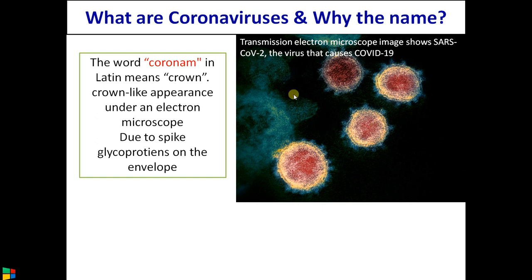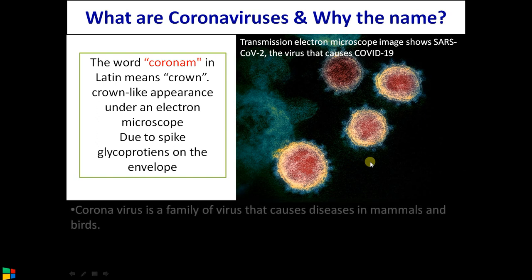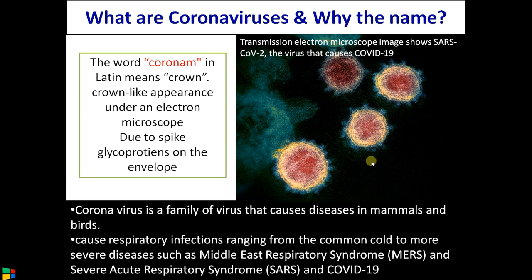It is actually the spike glycoprotein that projects out of the envelope. Coronaviruses are a family of viruses that cause diseases in mammals and birds. In humans, they cause respiratory infections ranging from the common cold to severe infections such as MERS, SARS, and now COVID-19.